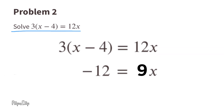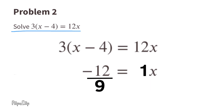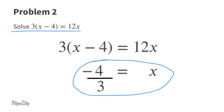Now the equation reads negative 12 equals 9x, but I'd like to know the value for just 1x, so I have to get x by itself. I'll divide 9x by 9 and negative 12 by 9 to keep them balanced. 9x divided by 9 is x, and negative 12 divided by 9 is negative 12 over 9, which can be reduced to negative 4/3. So x equals negative 4/3.